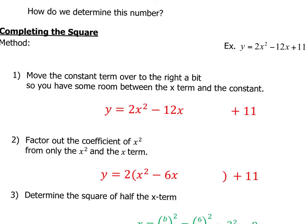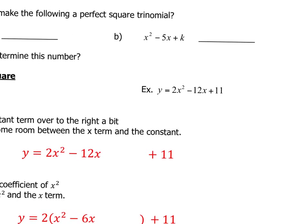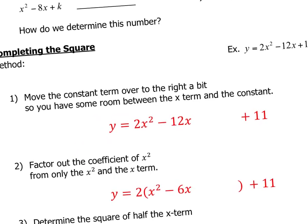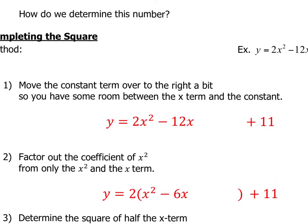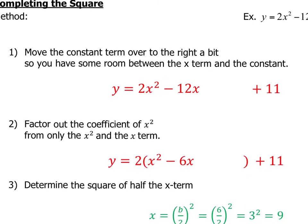Now we're going to look at completing the square for this question here. The first step that you want to do is you want to move the constant term over to the right a bit so that you have some room between the x term and the constant. So you want to factor out the coefficient of the x squared. So here we've got a 2 and I factor the 2 out only from the x squared and the x term. I leave this guy alone.